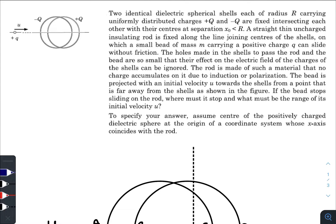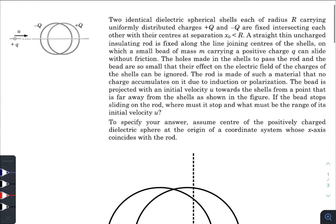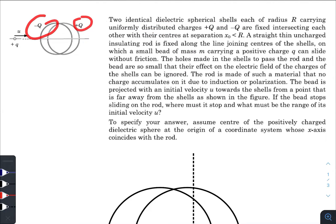Hey, what is up everyone, I hope all of you are doing great. In today's question, we have two identical dielectric spherical shells, each of radius R, carrying uniformly distributed charges plus Q and minus Q, fixed intersecting each other with their centers at a separation of x naught.